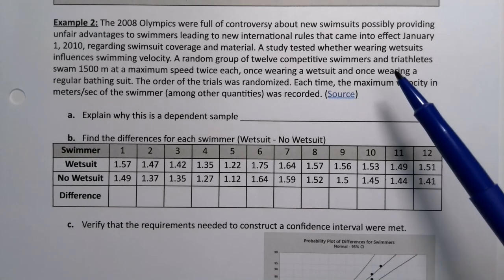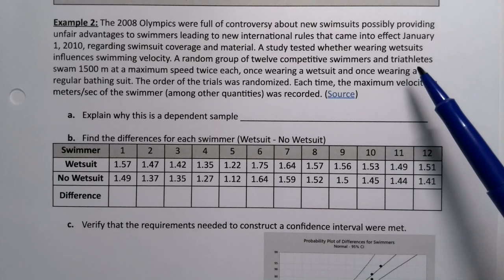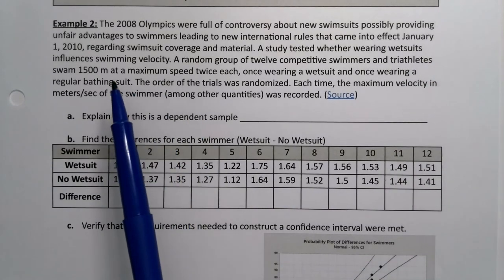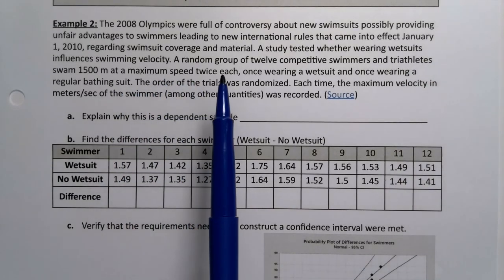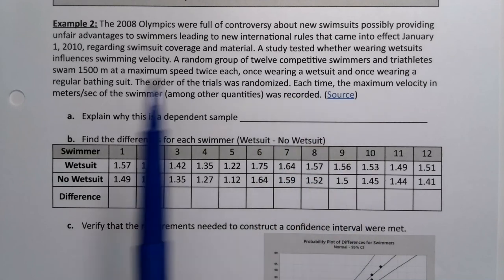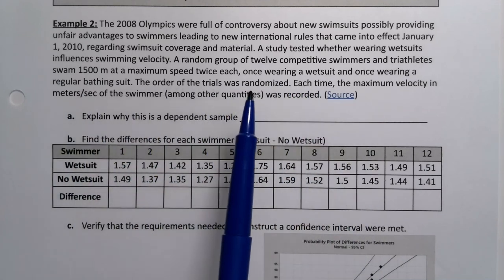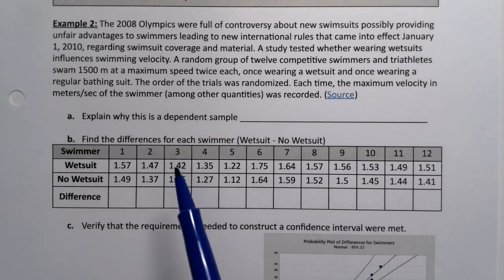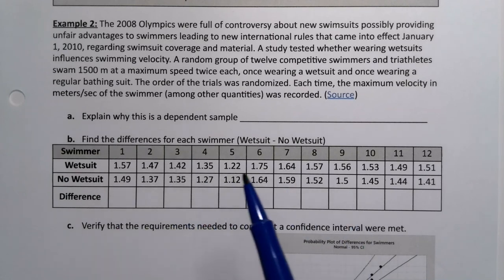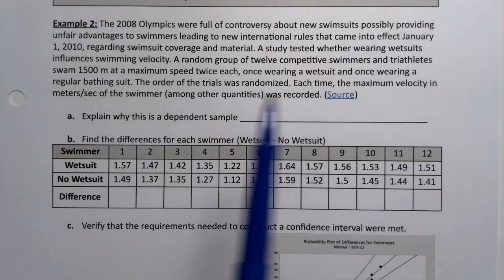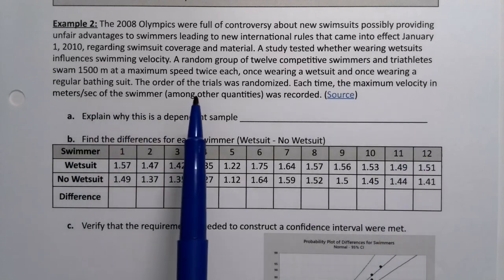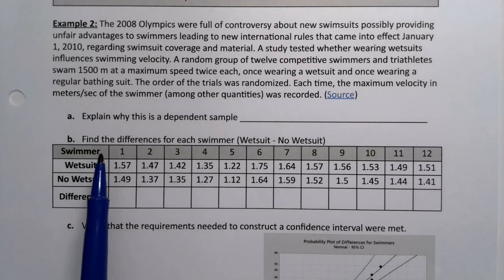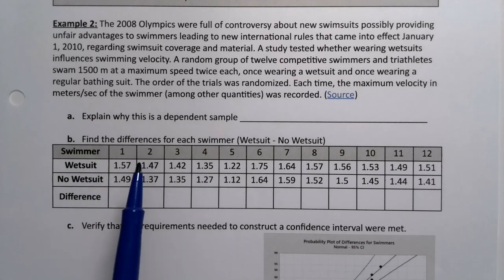So a random group of 12 competitive swimmers and triathletes swam 1500 meters at maximum speed twice each, once wearing a wetsuit and once wearing a regular bathing suit. The orders of the trials were randomized because you don't want everybody to go wetsuit first, because maybe they'd be more tired for the second trial. So each time the maximum velocity in meters per second of the swimmer was recorded.